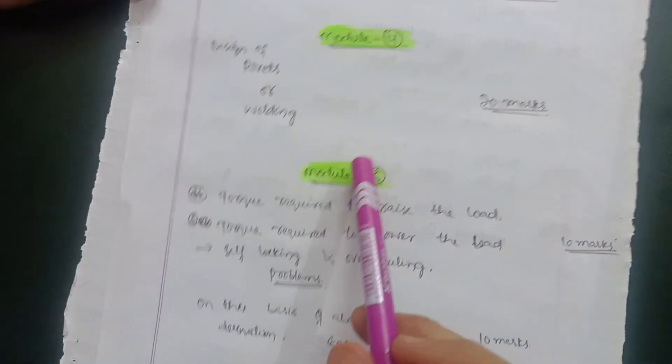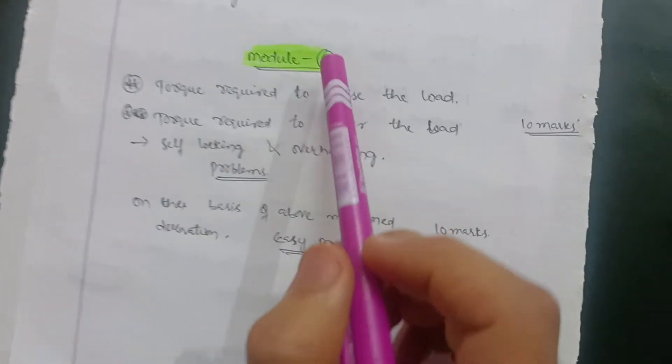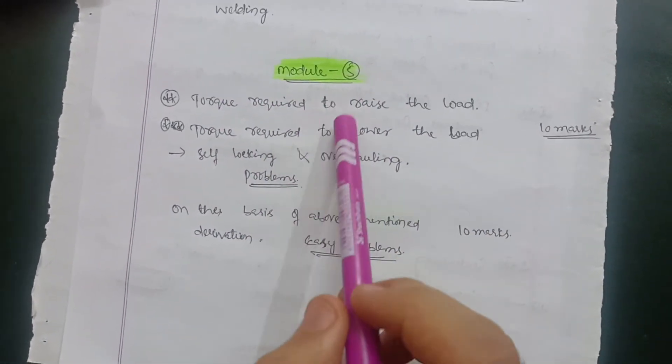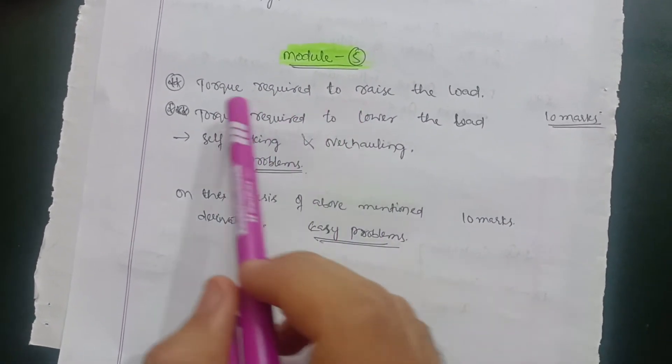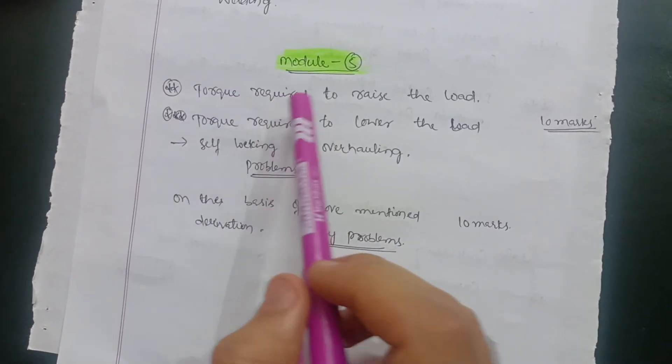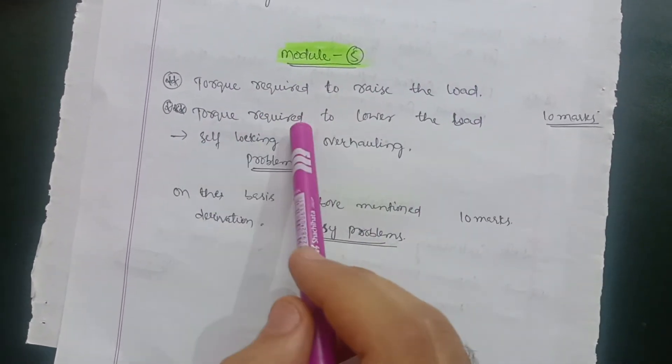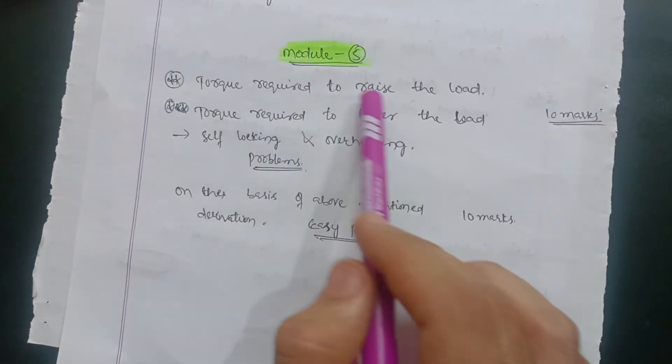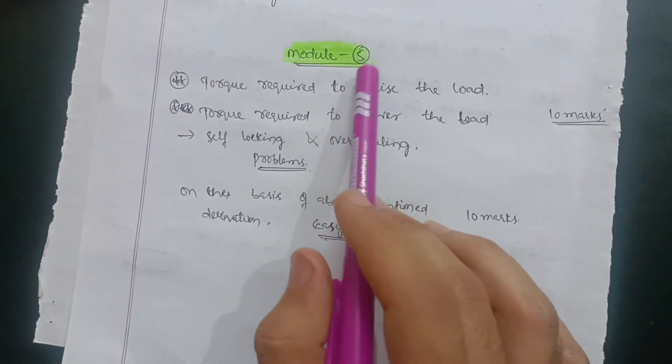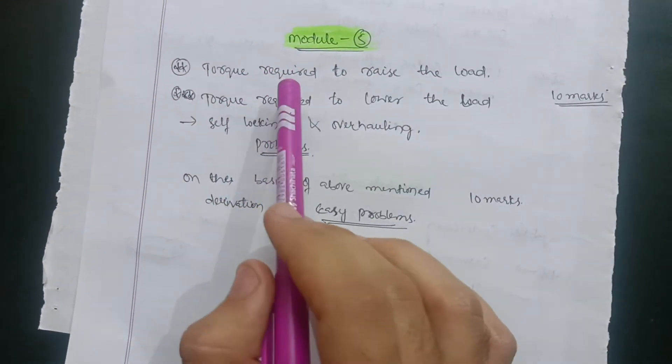In module fifth, there are two derivations definite. They may ask you sometimes torque required to raise the load and torque required to lower the load. There are these two possibilities in this particular module fifth.